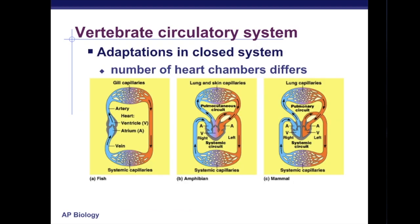The circulatory system of all vertebrates contains at least one heart with two or more muscular chambers. The chambers that receive blood are called atria; the chambers that pump blood to the body are called ventricles. The number of heart chambers may vary: fish have a simple cardiovascular system consisting of a two-chambered heart, amphibians have a three-chambered heart, and mammals have a four-chambered heart.